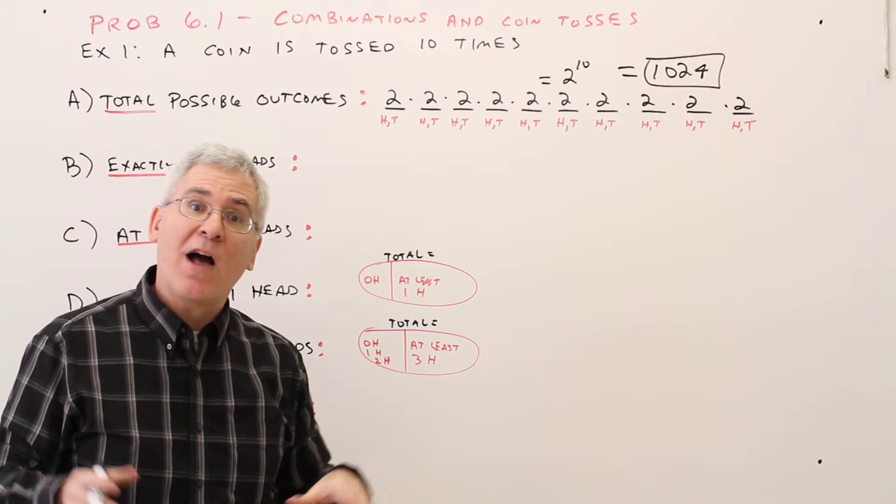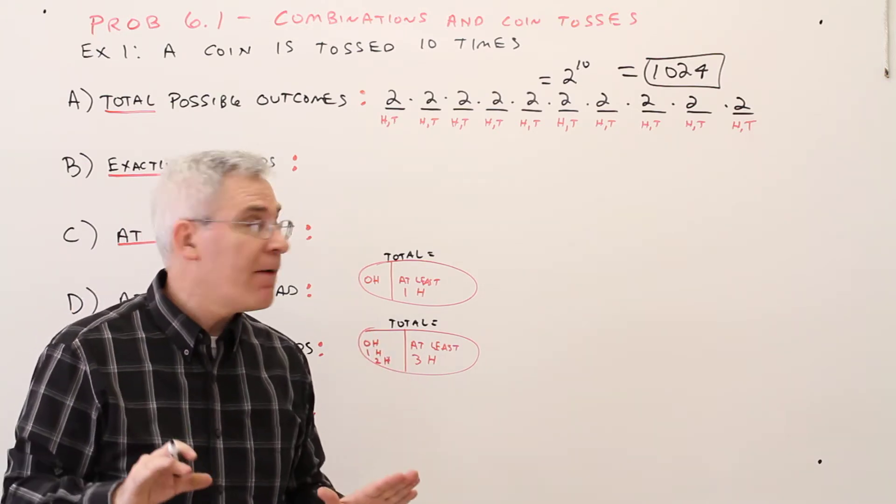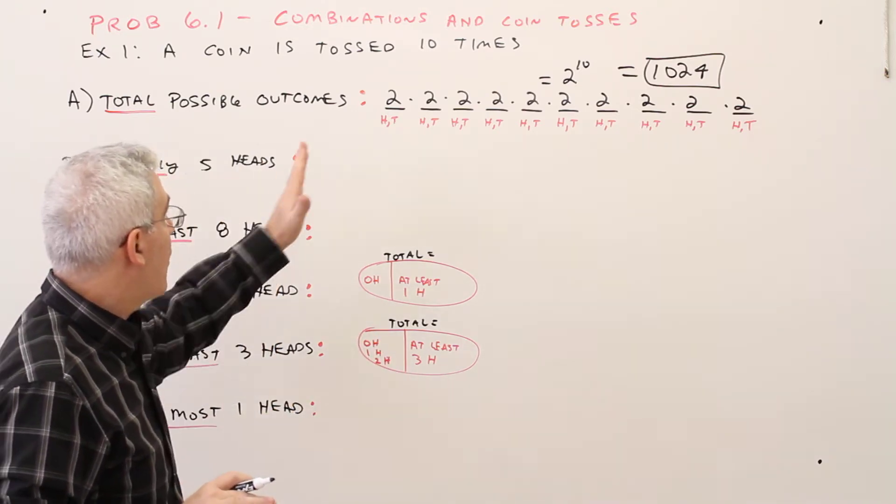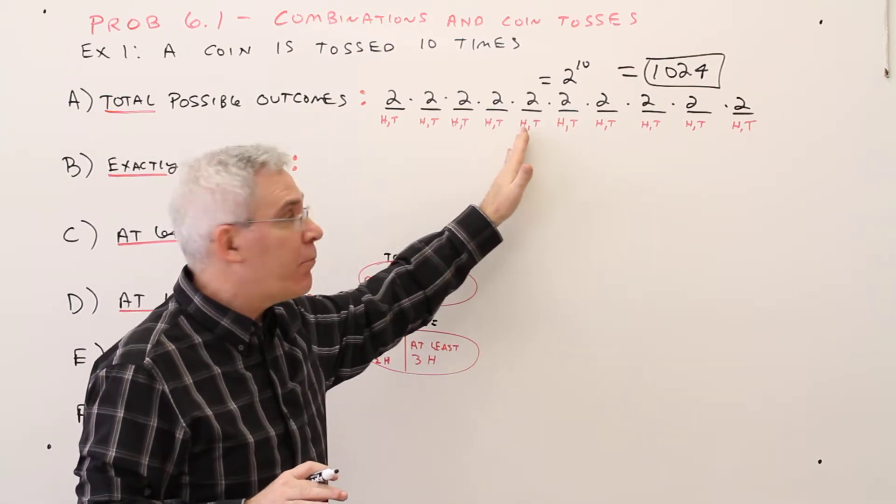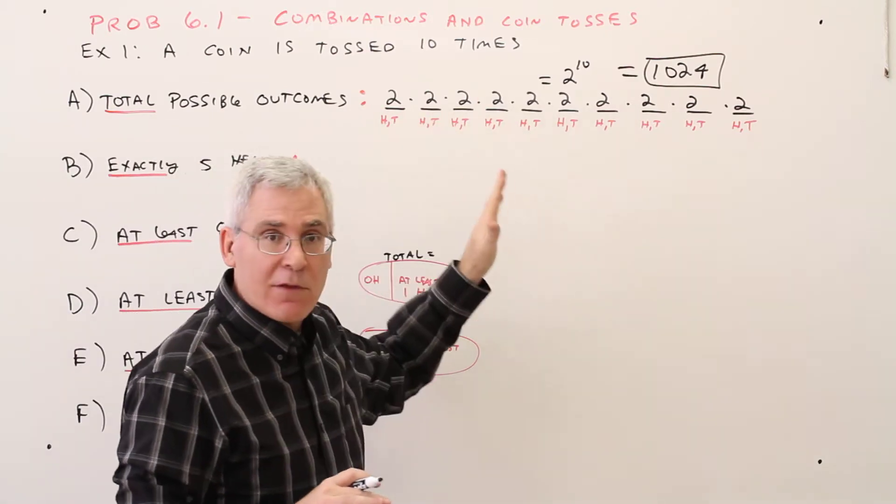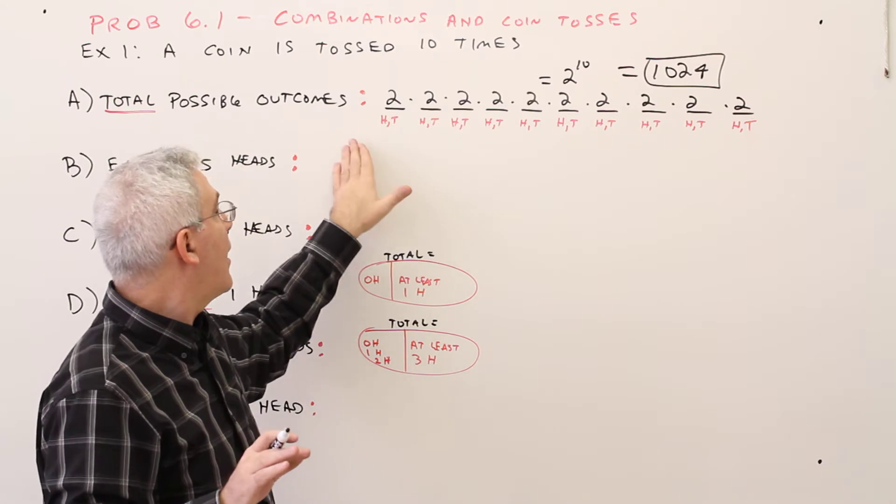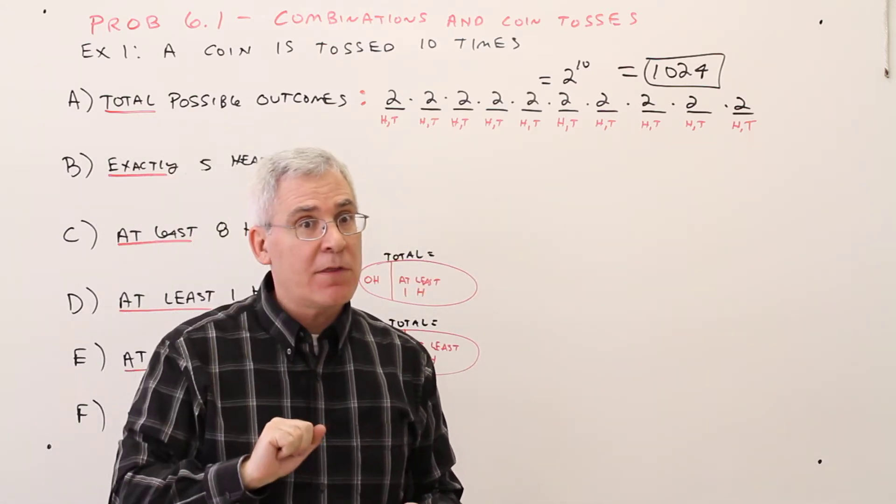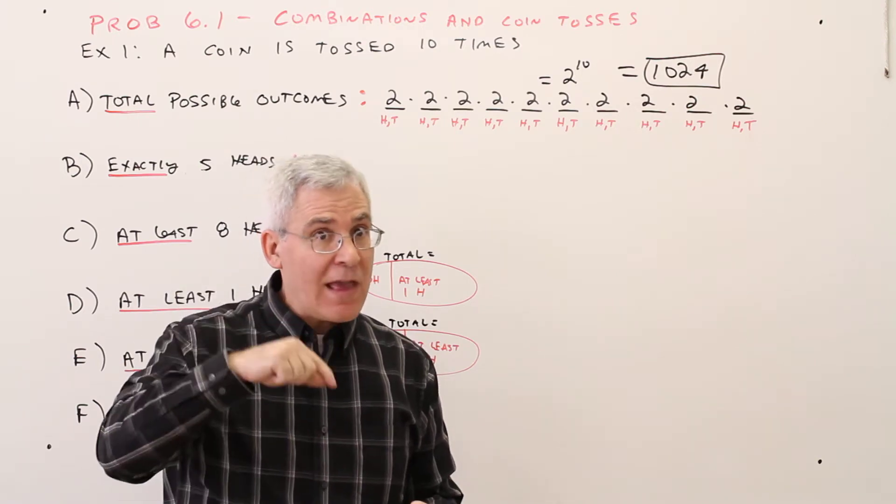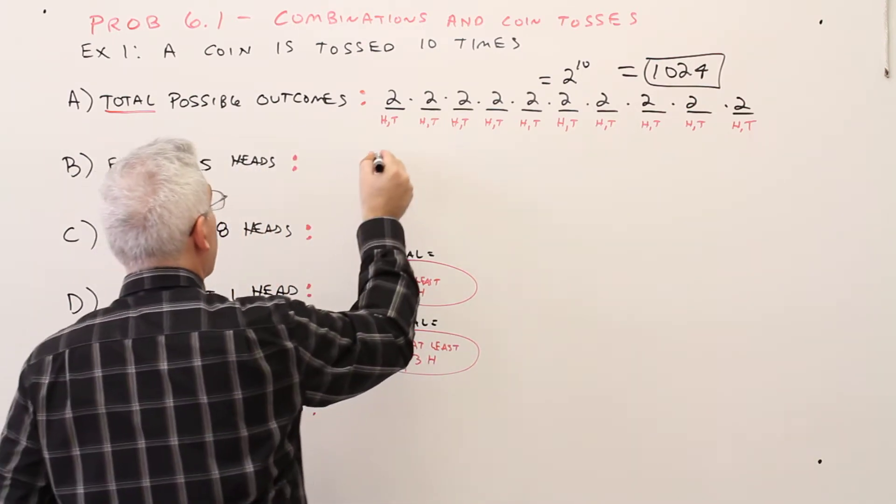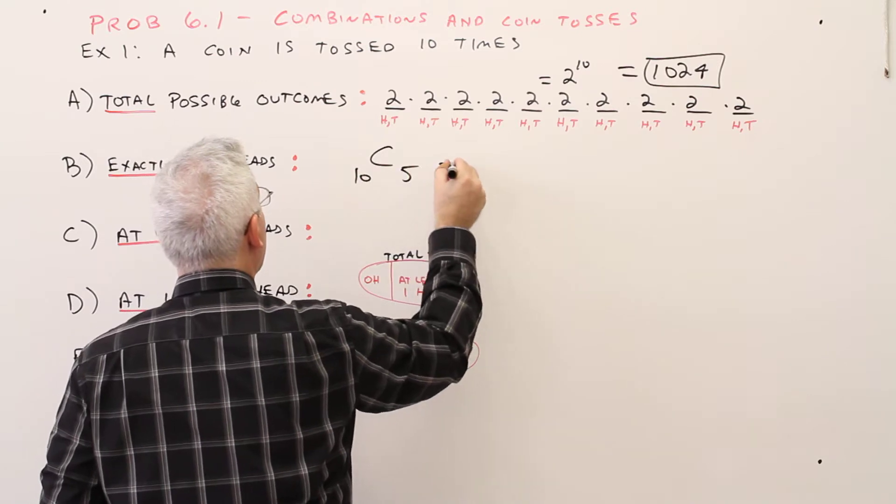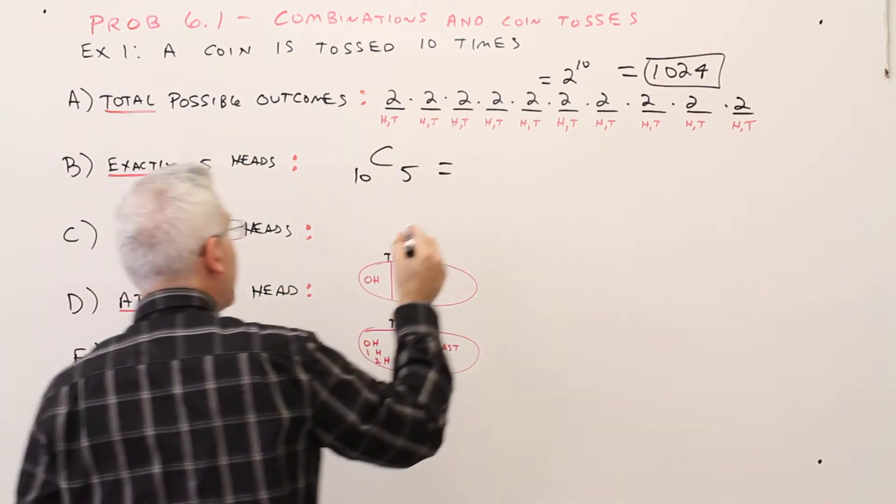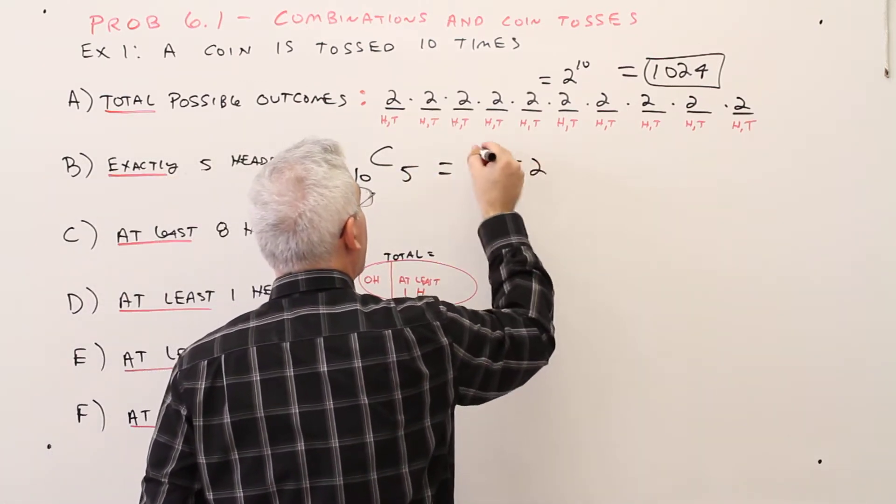We want to know how many outcomes have exactly 5 heads. So they could be 5 in a row, it could be heads, tails, heads, tails, etc. So basically, out of these 10 slots, choose 5 of them to have heads. 10 choose 5. So it would simply be 10 choose 5, if you punch it out you get 252.